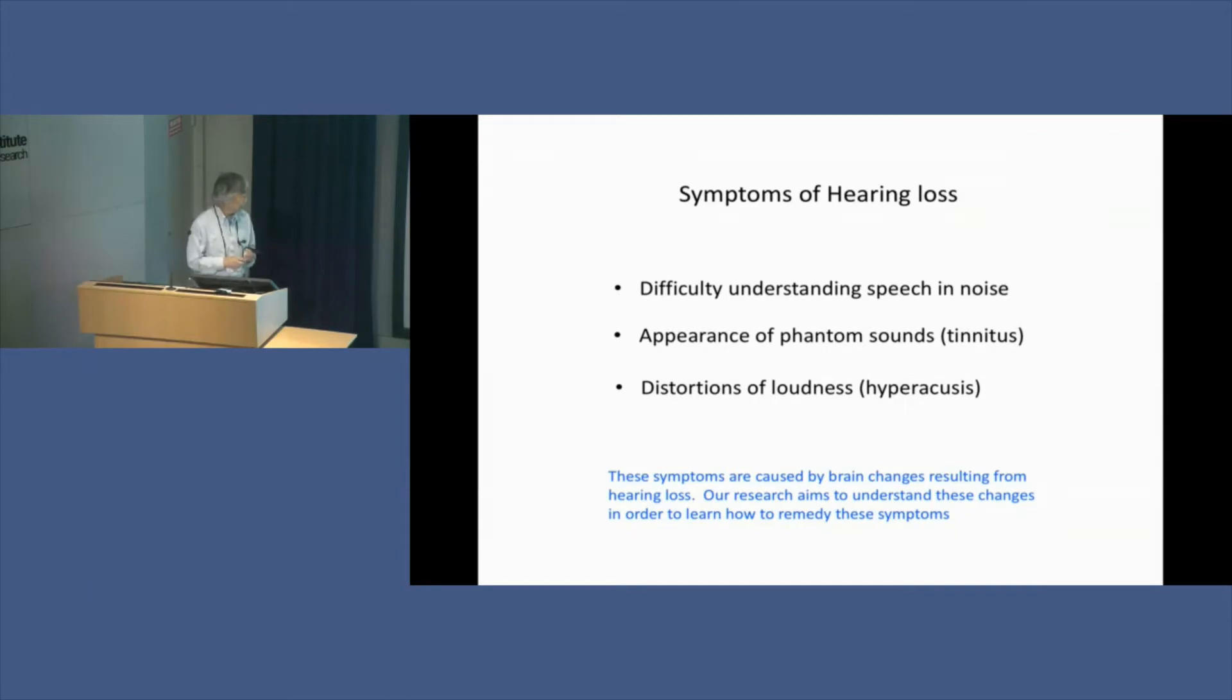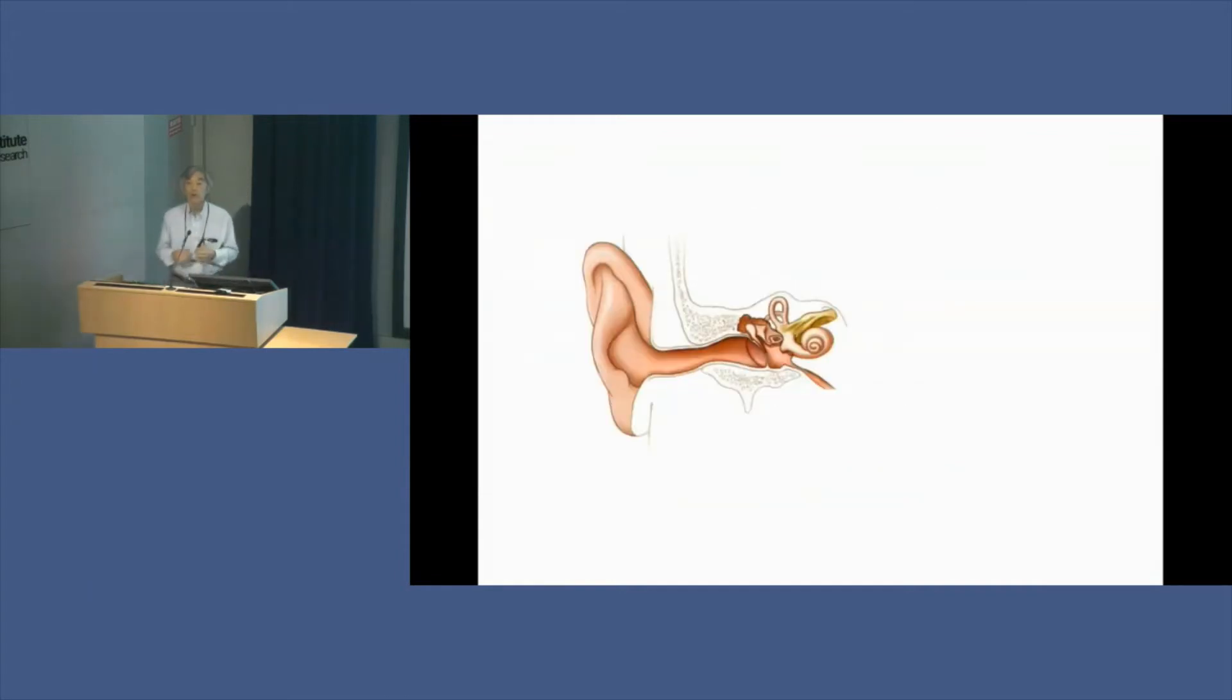To understand this, we need to follow the path of sound to see where the danger lies and what is being affected in the brain. The pinna is like a funnel that collects sound in the air and brings it into the tympanic membrane through the ear canal. The vibrations of the tympanic membrane and the middle ear bones convey the vibrations in air to vibrations in the inner ear.